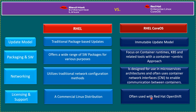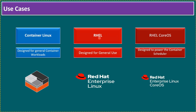Regarding use cases: RHEL is designed for general container workloads and can be used for all traditional applications, tier-based applications, and container applications. CoreOS is designed to power the container scheduler and is specifically dedicated to the enterprise-grade Kubernetes platform, which is OpenShift.